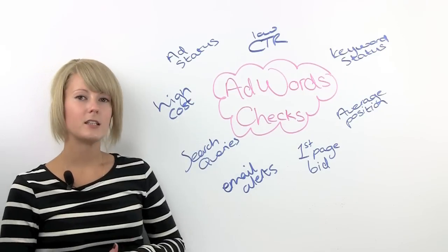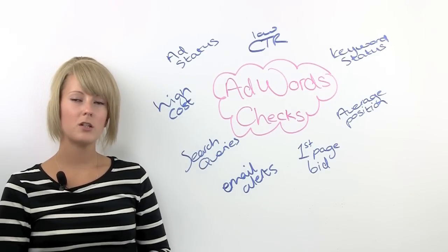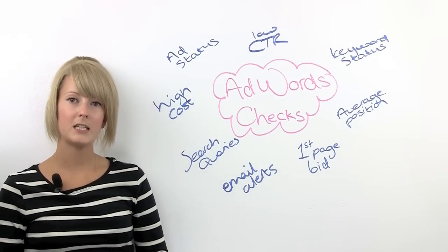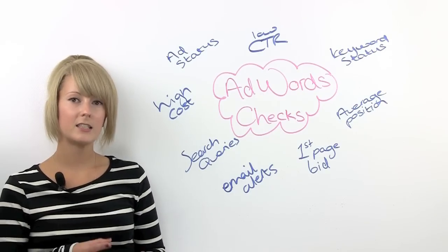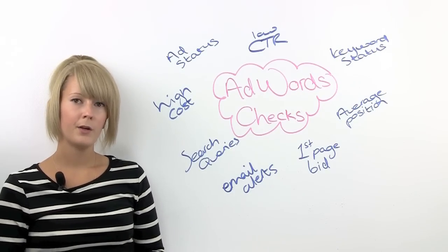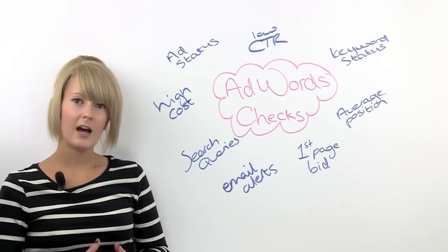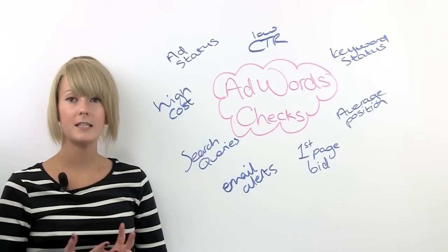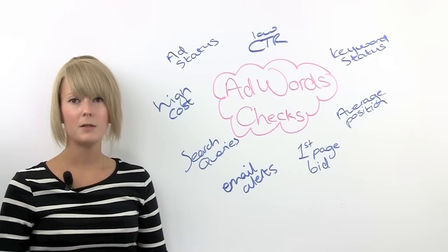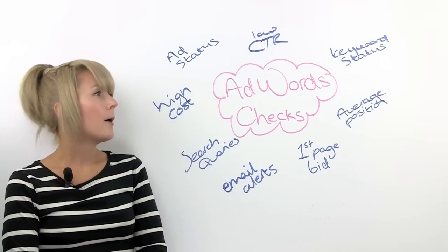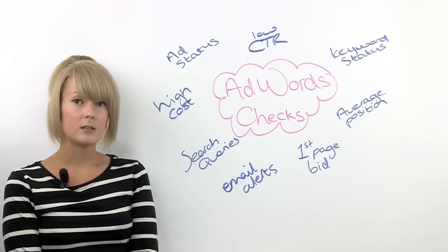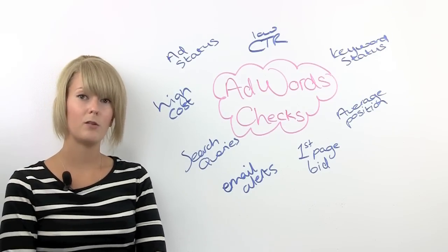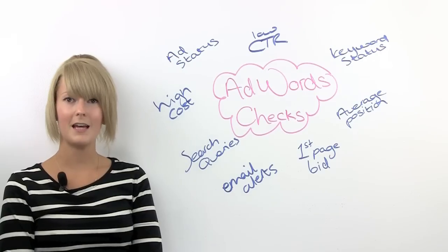Look at your ad status on a regular basis. Go to the Ads tab and filter by status. You want to look for anything that's disapproved or under review. Google have made lots of changes to their AdWords policies recently, so you might find that something you didn't expect to be disapproved might be disapproved. If you do find anything disapproved, you can hover over the little bubble next to it and it will give you a reason why, and you can then go back and edit it.